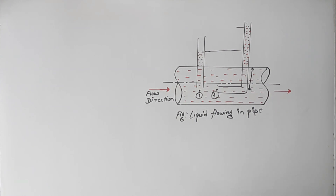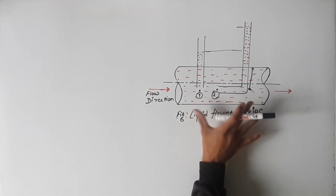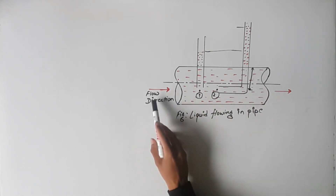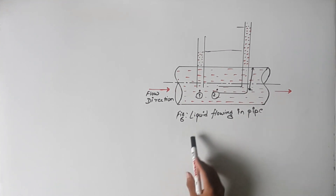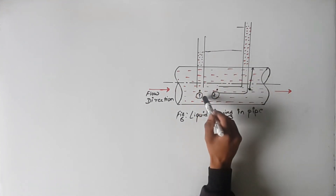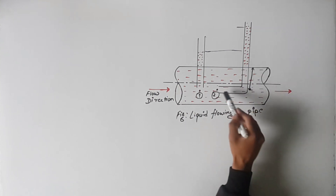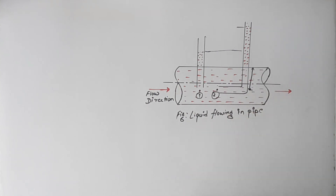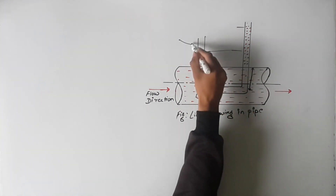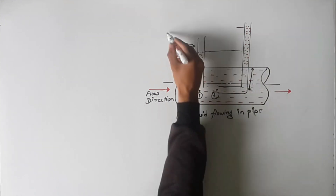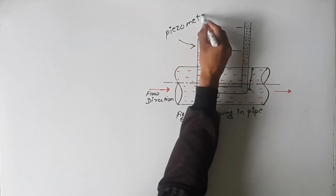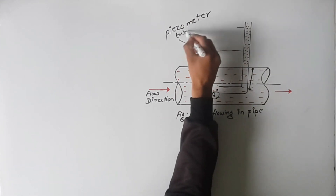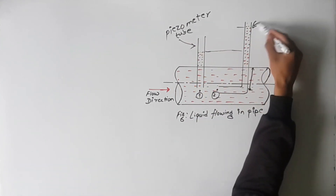Let's start now. You can see the figure of one pipe here — water is flowing from left to right. A piezometer tube is inserted in the pipe and a pitot tube is also inserted. This is the piezometer and this is the pitot tube.